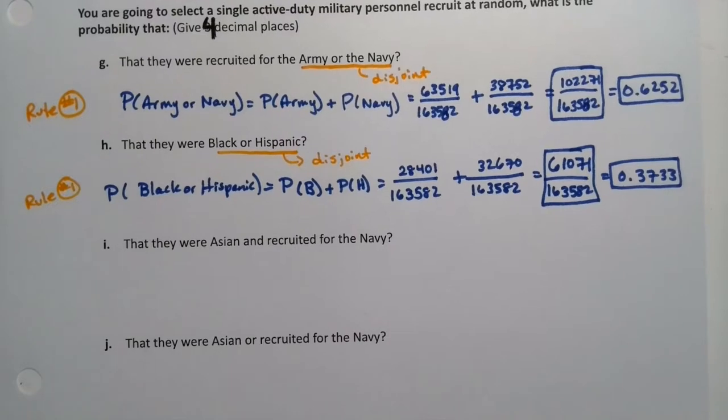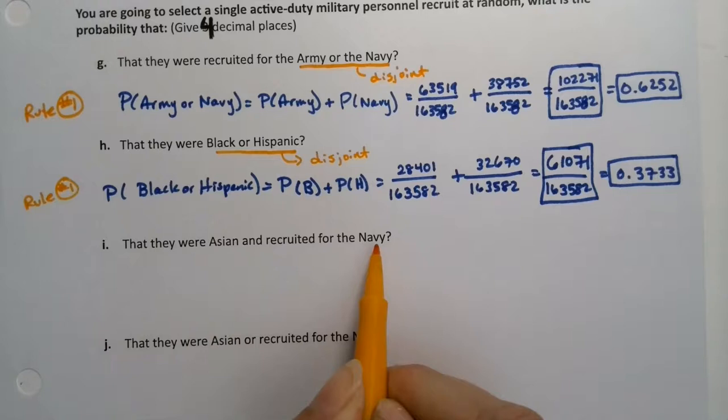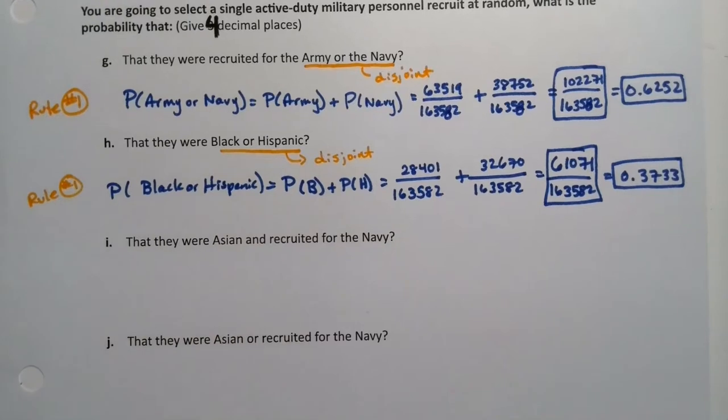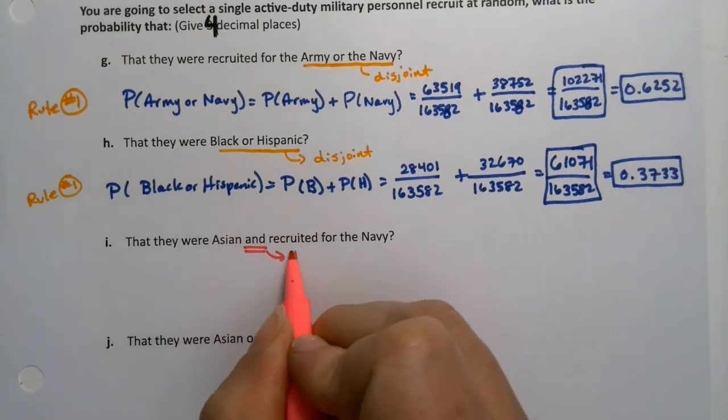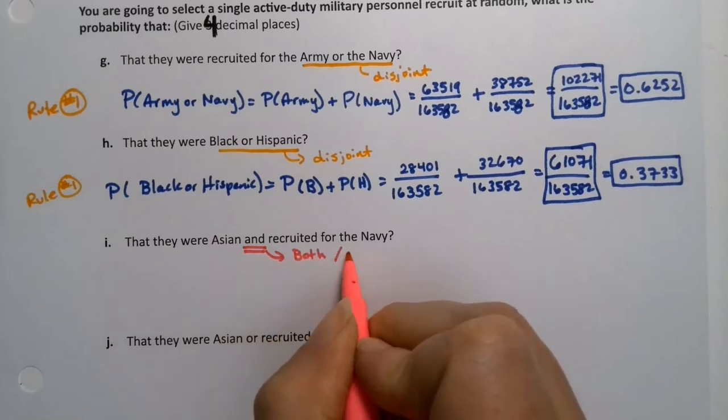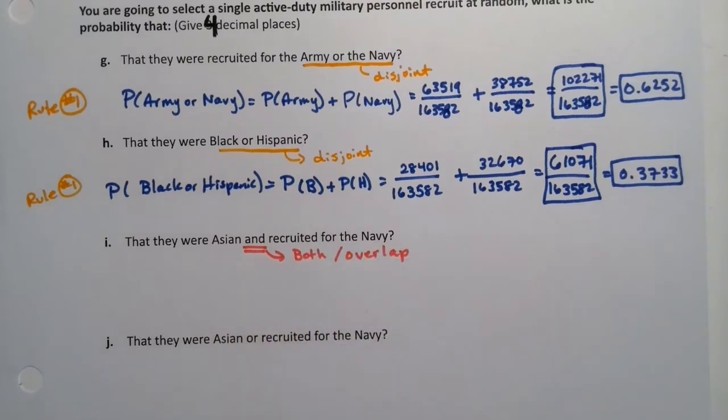All right, now it's going to be fun. We want to do Asian and recruited for the Navy. Now that's a little bit tricky. Notice this part right here - that means we're looking for both, we're looking for an overlap. We haven't done this yet, not in these two tables.